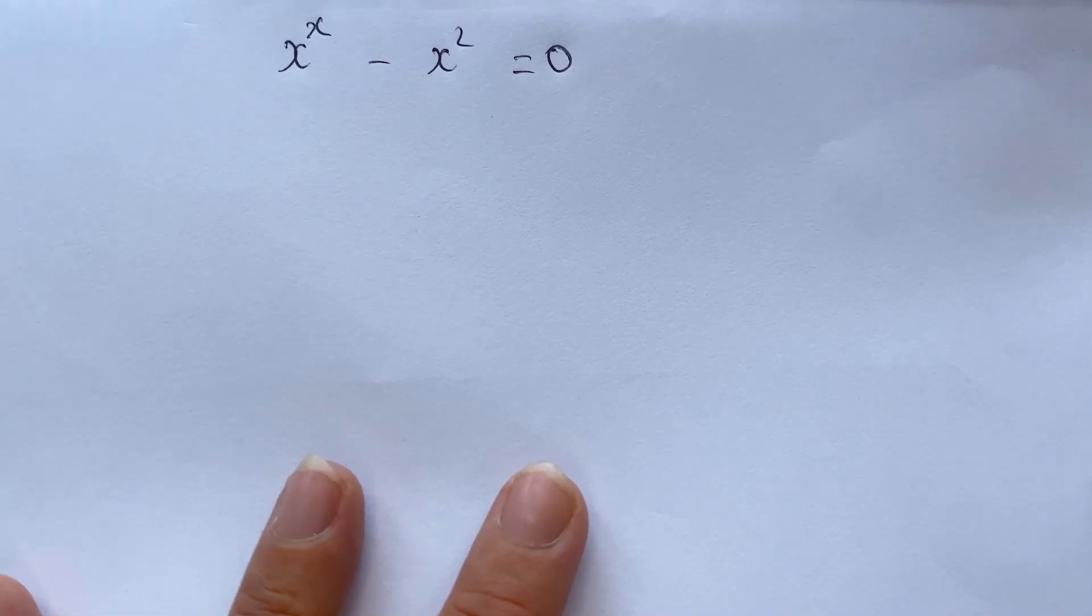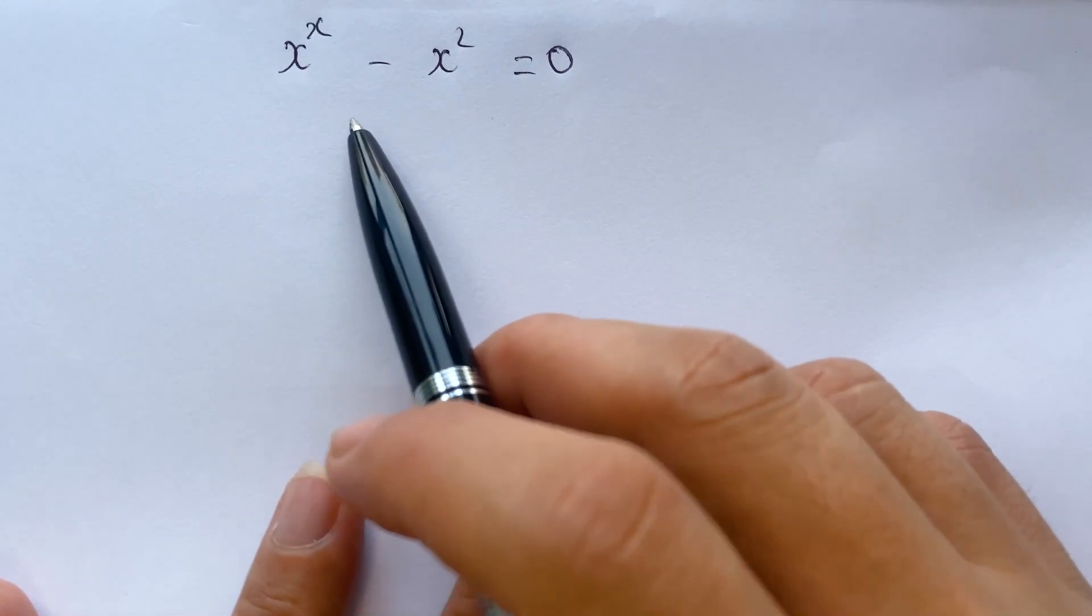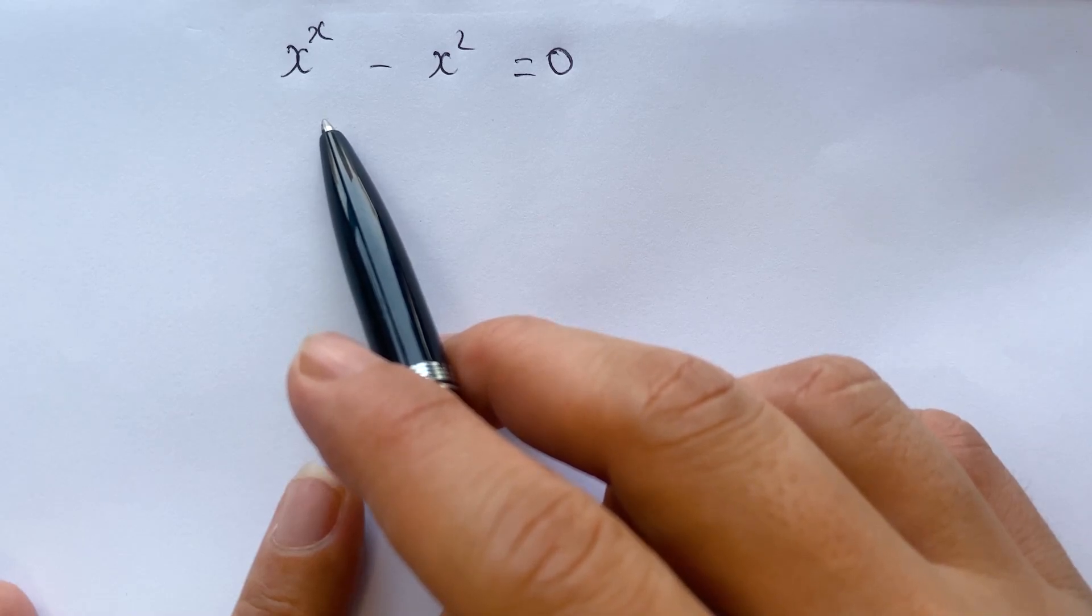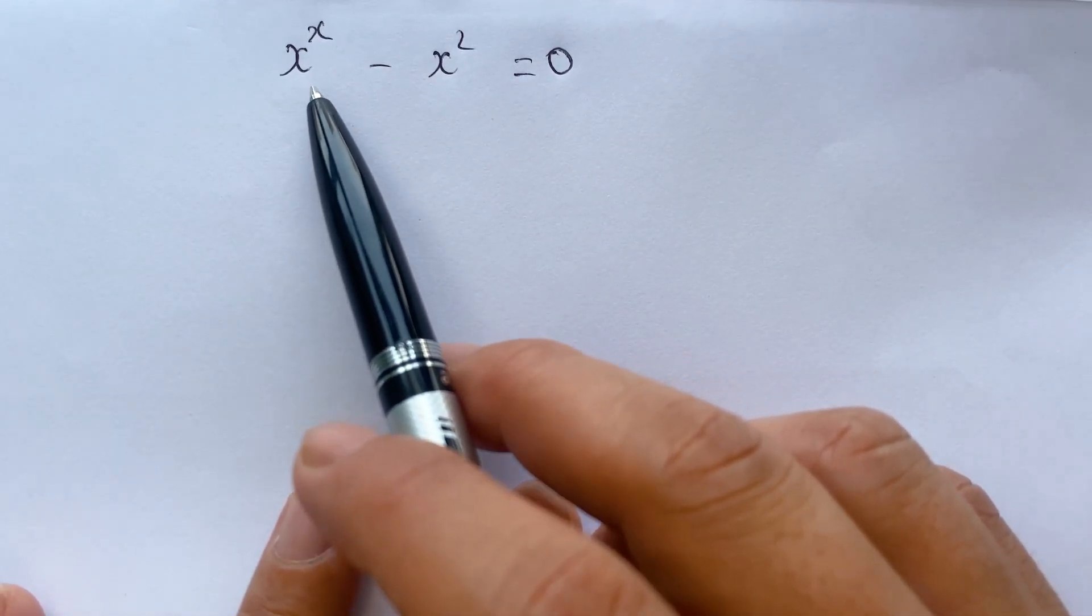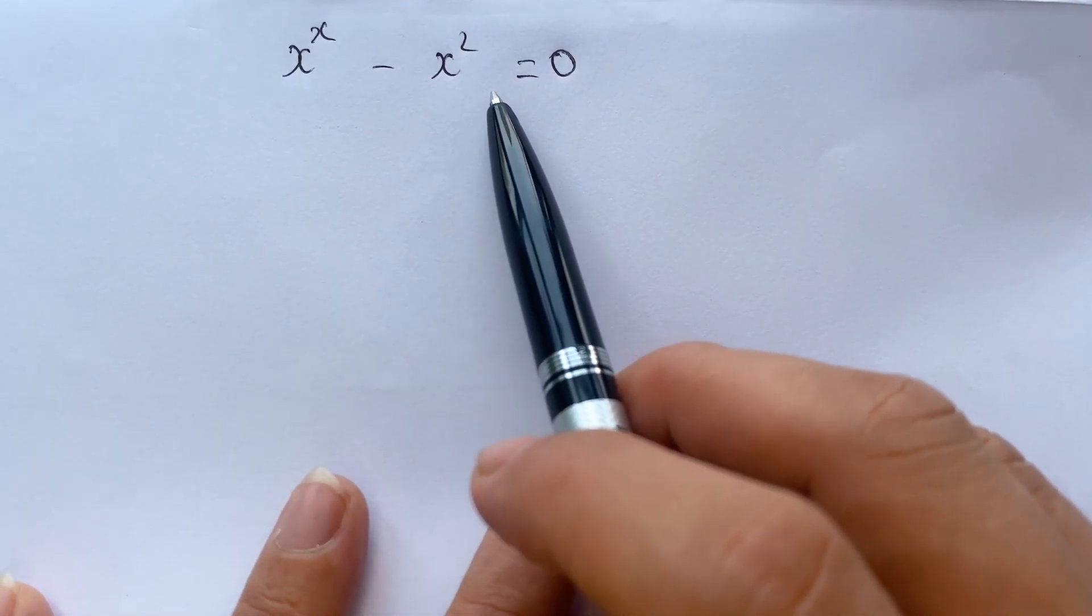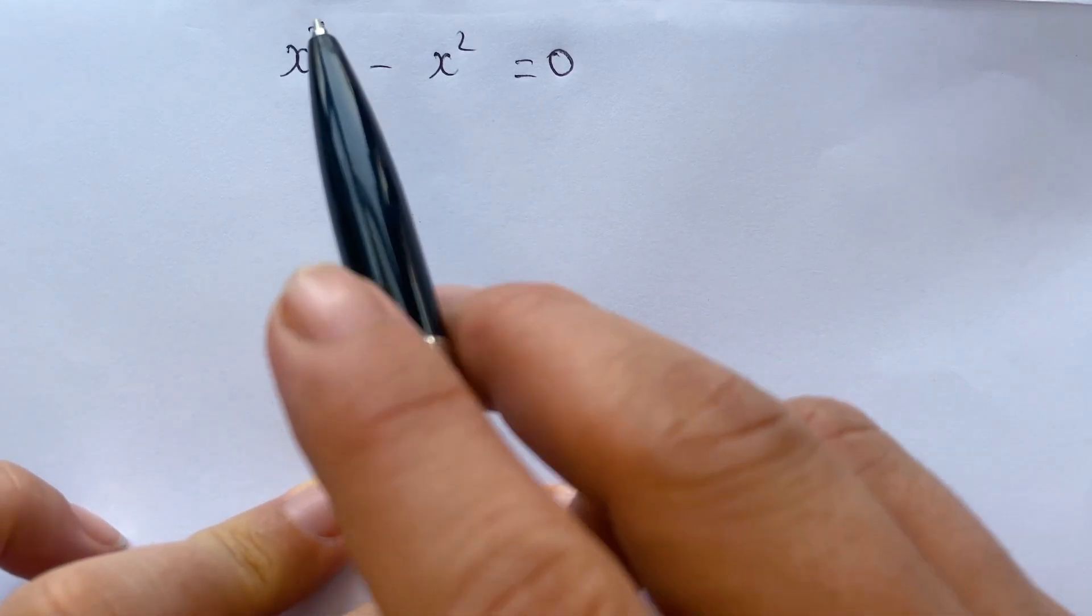Hello everyone, how to find the value of x in the exponential equation x power x minus x square equals 0.